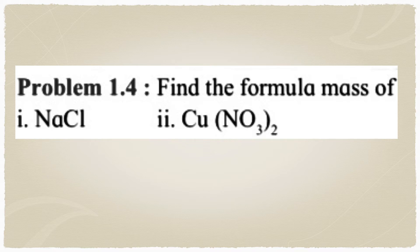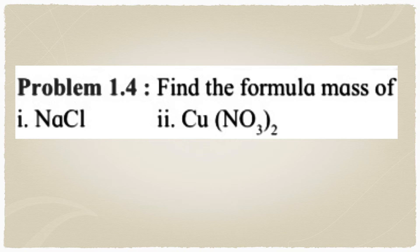Cu is in the +2 oxidation state and NO₃ is in the −1 oxidation state. Copper can exist in two oxidation states: +1 and +2. The +2 state compounds are called 'ic' compounds — cupric nitrate, cupric oxide — while +1 state compounds are called 'ous' compounds, such as cuprous oxide or cuprous nitrate.